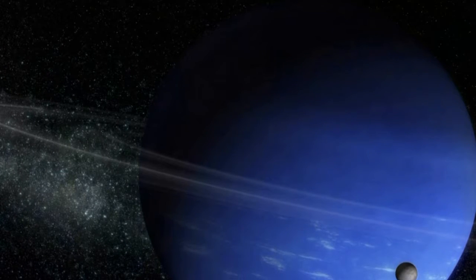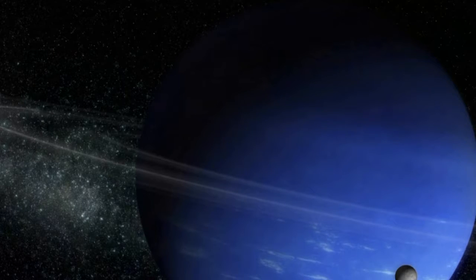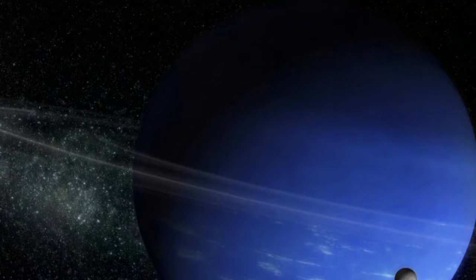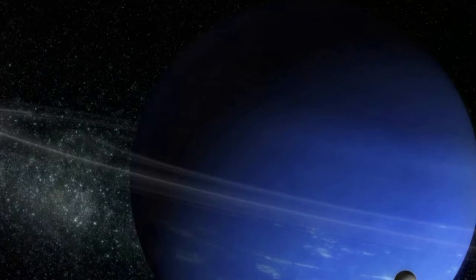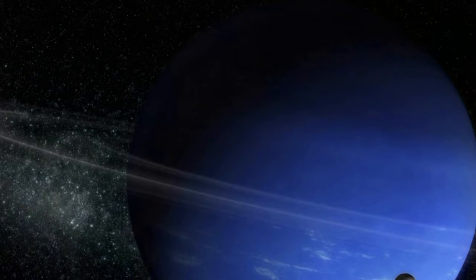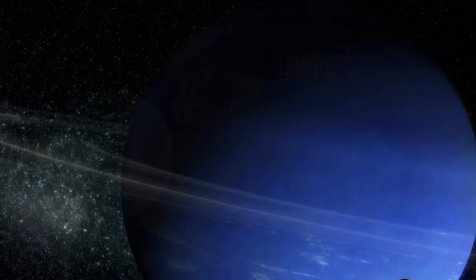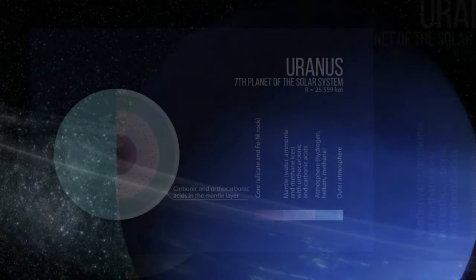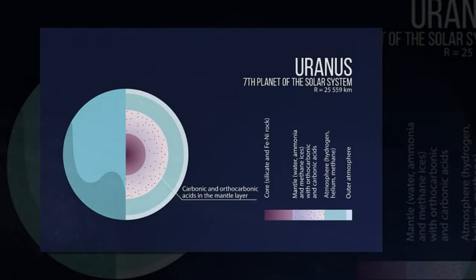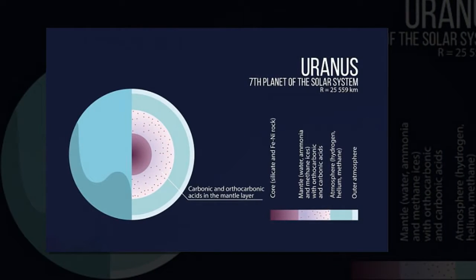The researchers, whose work is published in the journal Scientific Reports, used algorithms that predict crystal structures and compounds that form at high pressures. They have previously shown that unknown variants of salt that have far more sodium and chlorine atoms than normal can form at pressures that exist in the interiors of so-called super-Earths.